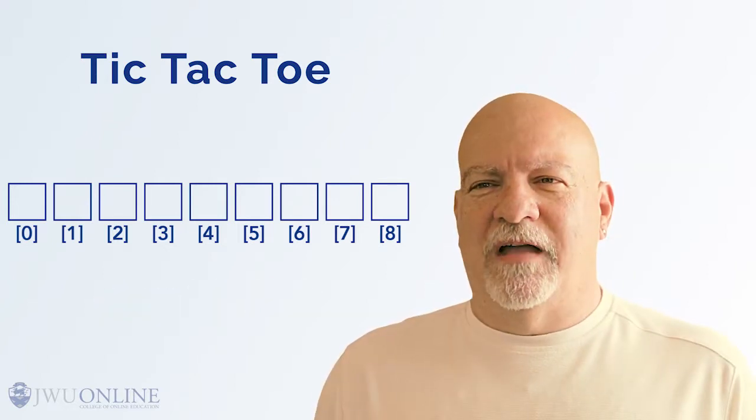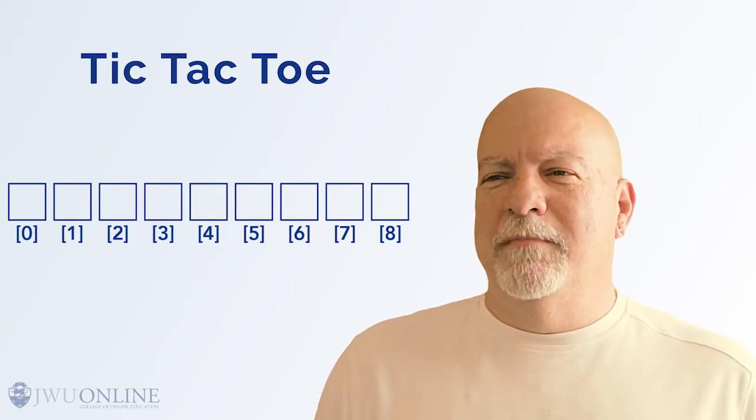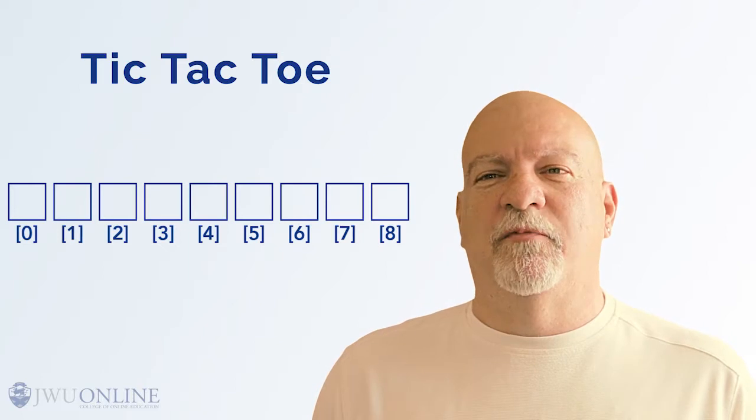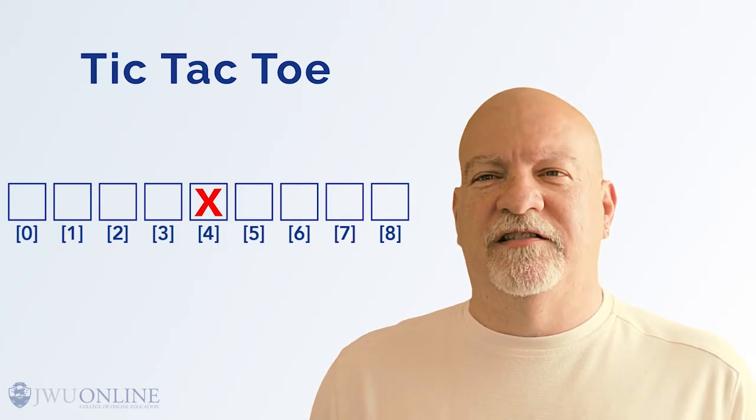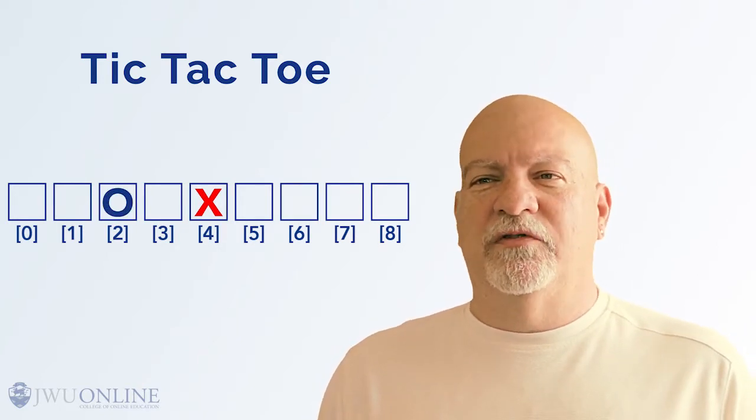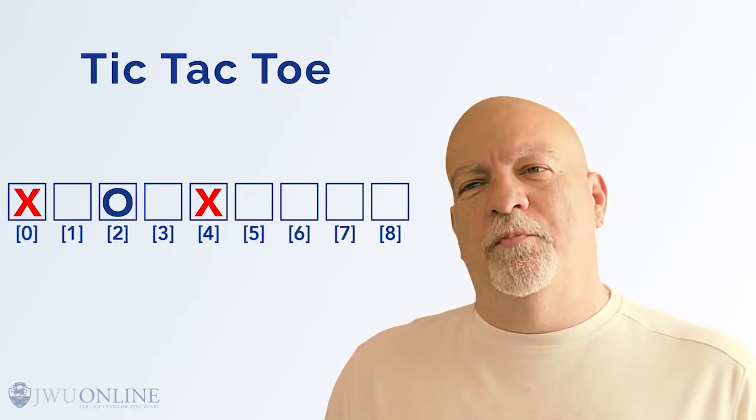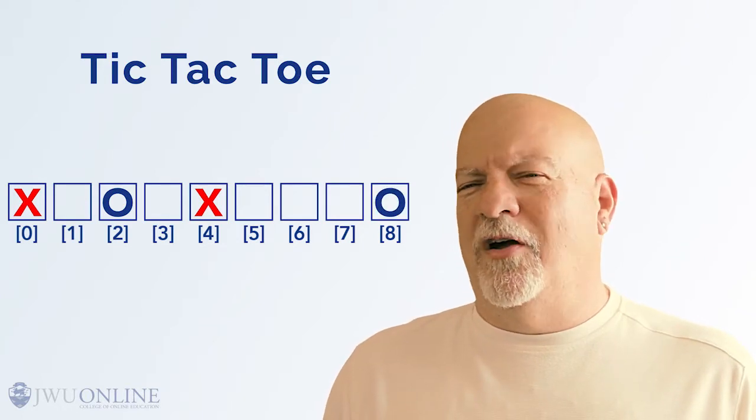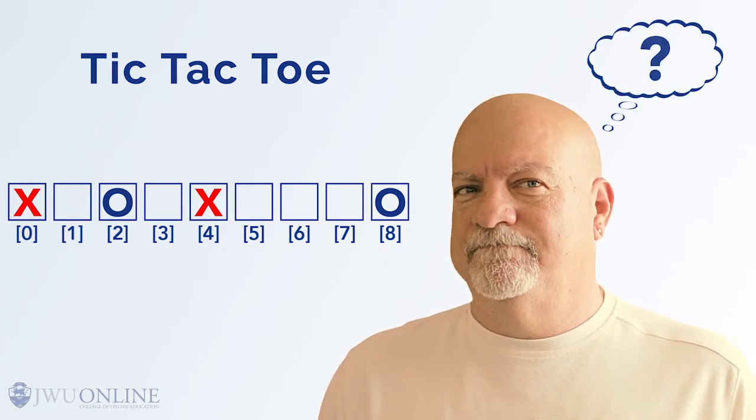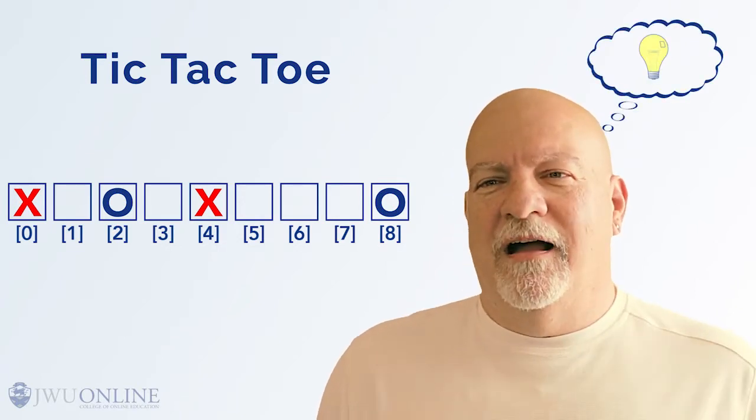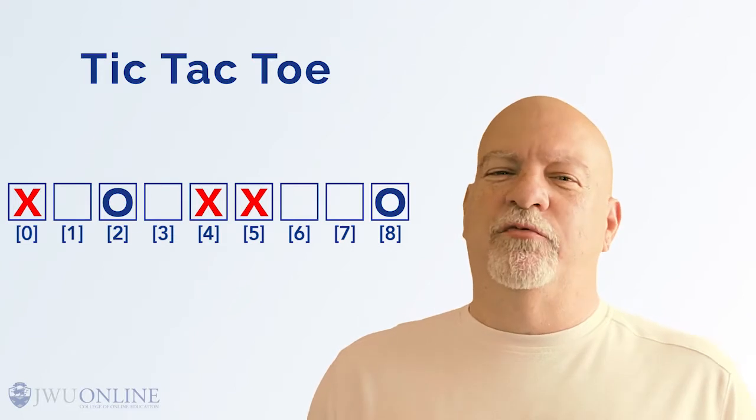So let's play. I'll go first as x and you'll be O. I think I want the middle square, so I'll pick ttt sub 4. Let's just say you choose the upper right, so you choose ttt sub 2. Well then, I will take the upper left, ttt sub 0. Now you need to block, so you pick ttt sub 8. Following along, what should x do next? Well, I'm going to block, so I need to choose ttt sub 5. Boy, this is really confusing.